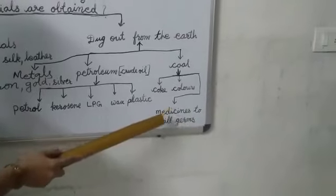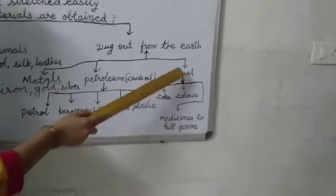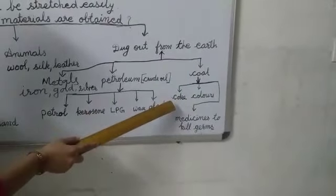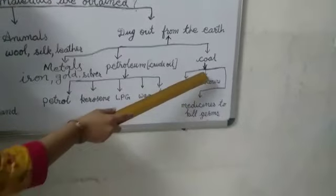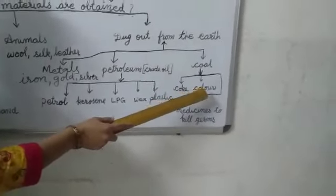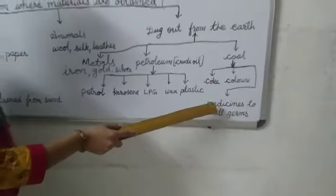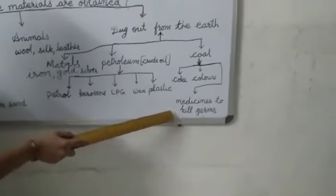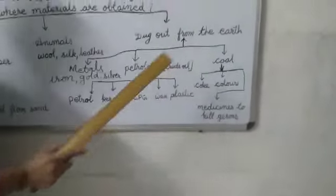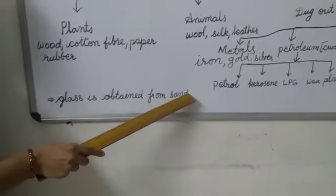color, medicines to kill germs from the coal. And coke is used as fuel. Colors are used to color our clothes. And medicines, you know that it is used for killing the germs. Now, glass. Glass is obtained from sand.